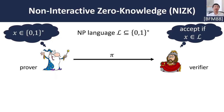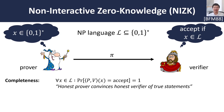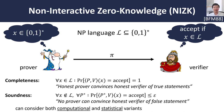The focus of this work is on non-interactive zero knowledge, or NIZKs. In a NIZK proof system, a prover tries to convince the verifier that some NP statement X is indeed contained in the language. NIZKs should satisfy three main properties, the first of which is completeness, which essentially says that the honest prover should be able to convince the honest verifier of a true statement. Then we have soundness, which says that no prover should be able to convince the verifier of a false statement.